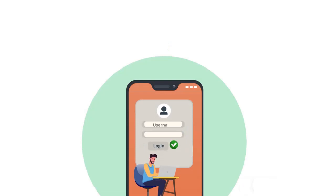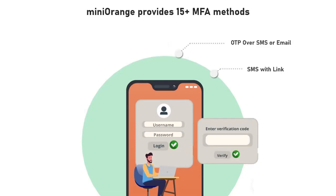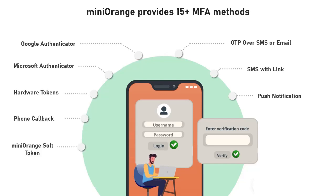Mini Orange provides 15 plus MFA methods like OTP over SMS or email, SMS with link, push notifications, Google Authenticator, Microsoft Authenticator, hardware tokens, phone callback, Mini Orange soft token, and many more.